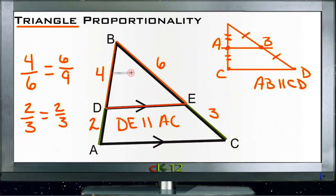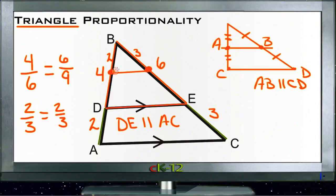So anywhere along here that we draw a straight line, as long as it's parallel to that bottom line, the distances from it to B will be in proportion — 2 on one side, 3 on the other. In fact, if this distance happens to be 2, then this distance back up to B will be 3, because that proportion has to stay the same all the way through. Kind of neat! Let's use that for example questions.